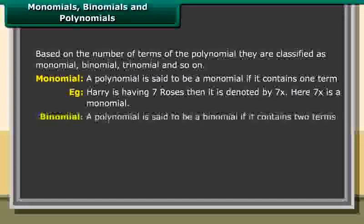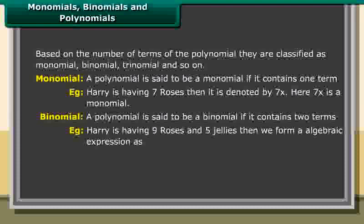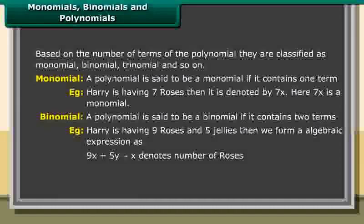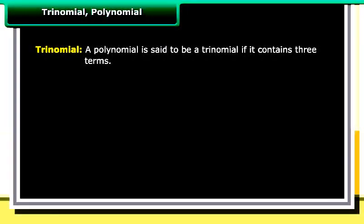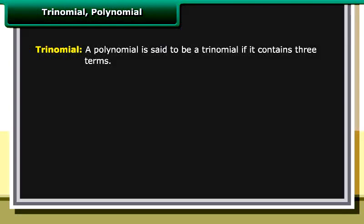Binomial: A polynomial is said to be a binomial if it contains two terms. Example: Harry has nine roses and five jellies. Then we form the algebraic expression 9x plus 5y, where x denotes the number of roses and y denotes the number of jellies. 9x plus 5y is a binomial.